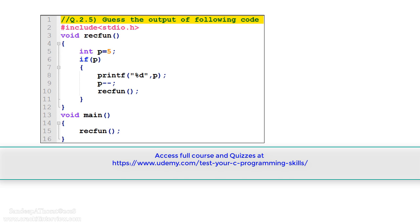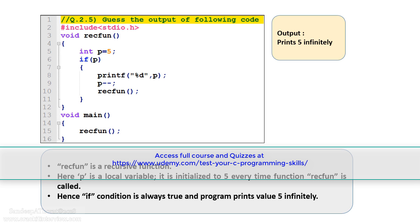So what is the answer of this program? The correct answer is: this program prints the number 5 infinitely. Please note that the variable p declared in the rec function is a local variable, and it is initialized to 5 every time the rec function is called. So the if condition in the rec function is always true, and this program continuously prints the value 5 infinitely.